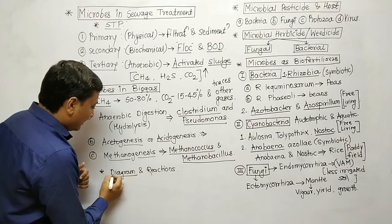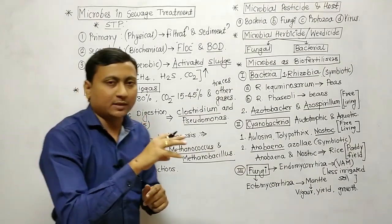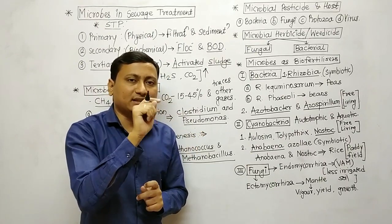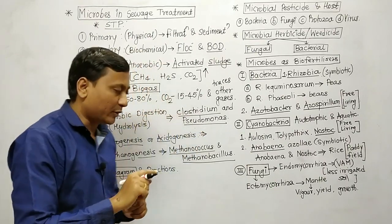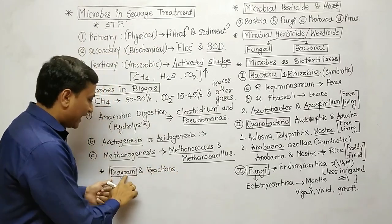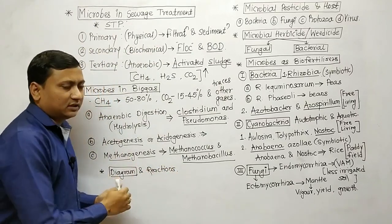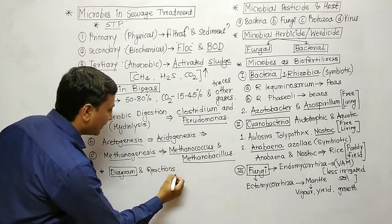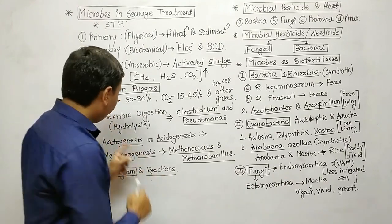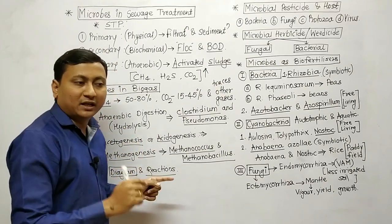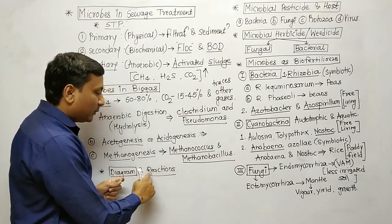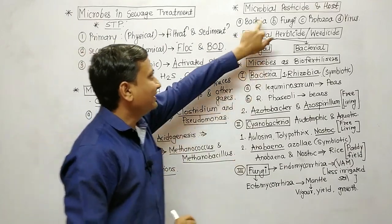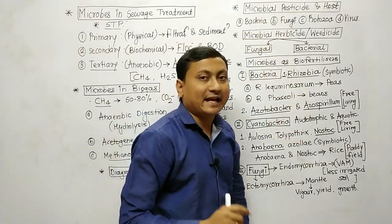The biogas diagram is very important. In the question paper, a diagram may be given with missing labels that you have to identify. In this chapter, you also need to prepare the diagram of a mushroom. Make sure you properly prepare both the mushroom and biogas diagrams.